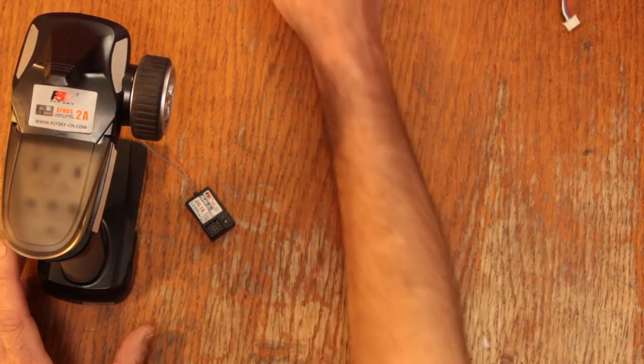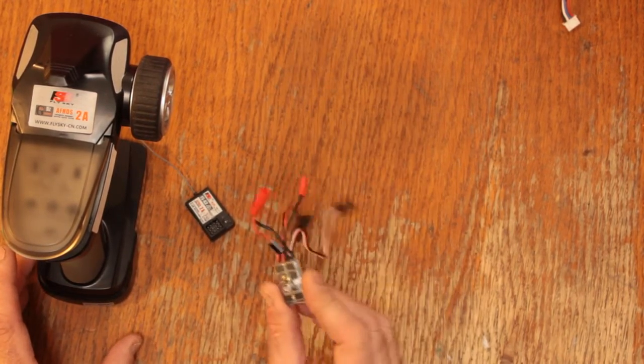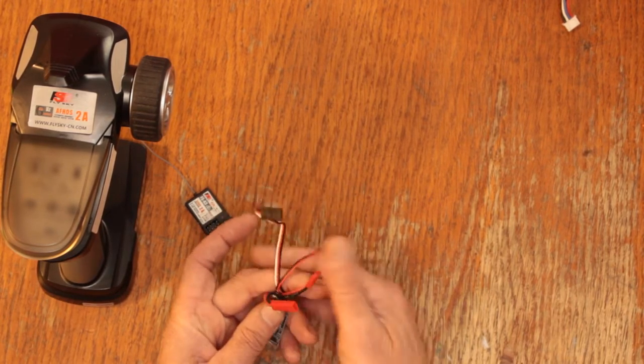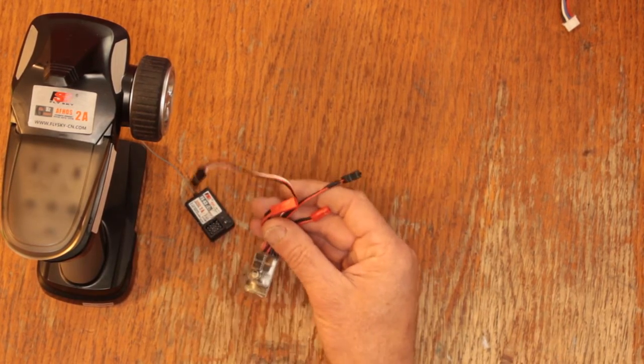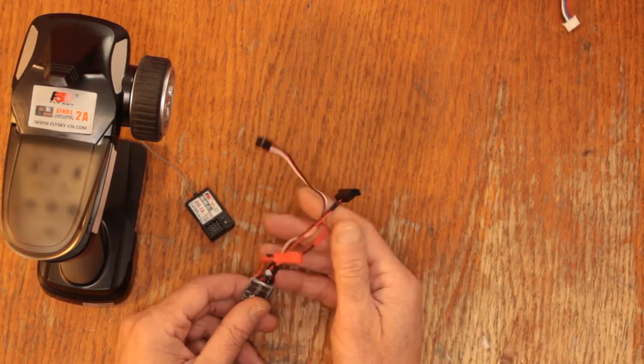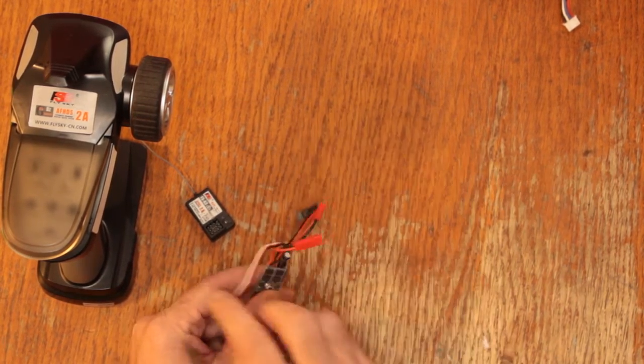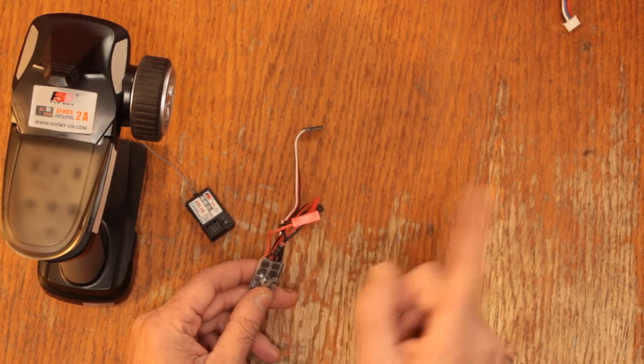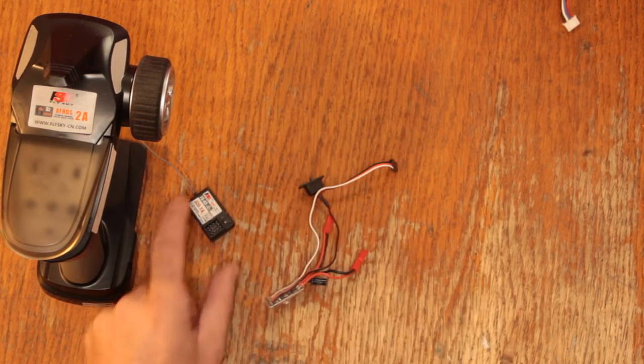Next thing you're going to need is an ESC or electronic speed controller and this is going to power your LEGO motors. This was $9 and the ESC takes power from your battery, delivers it to your motor and it also powers the radio.